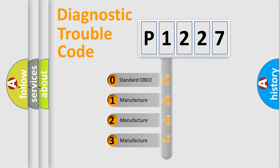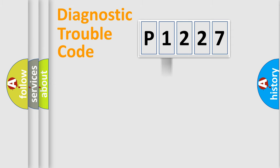If the second character is expressed as zero, it is a standardized error. In the case of numbers 1, 2, 3, it is a car specific error.